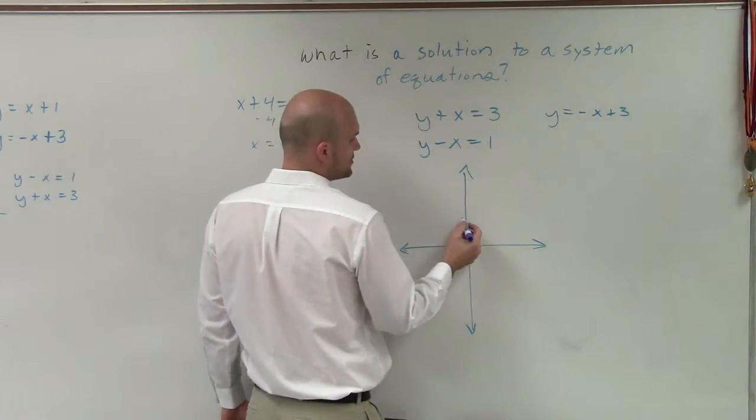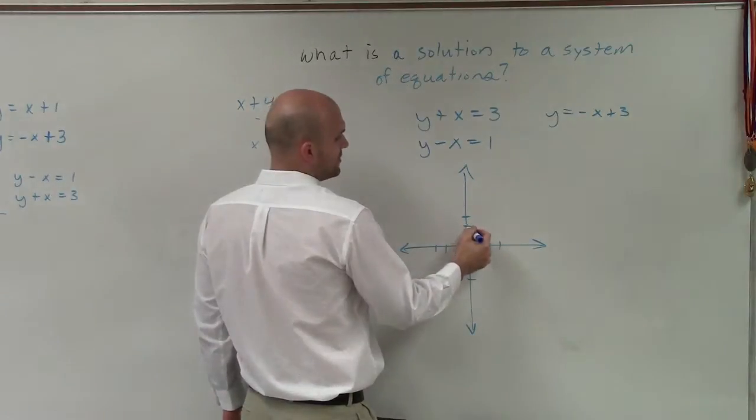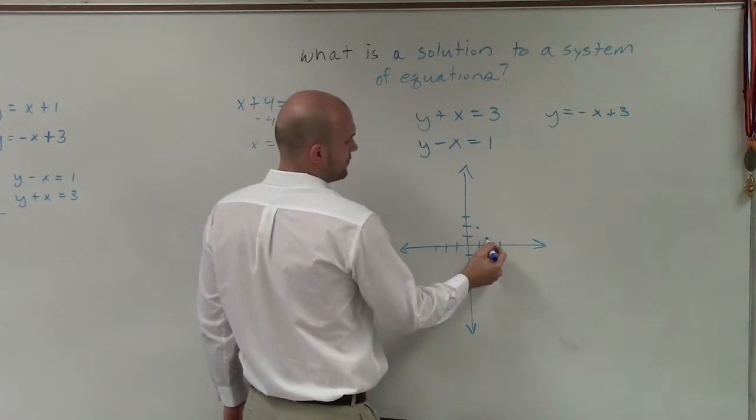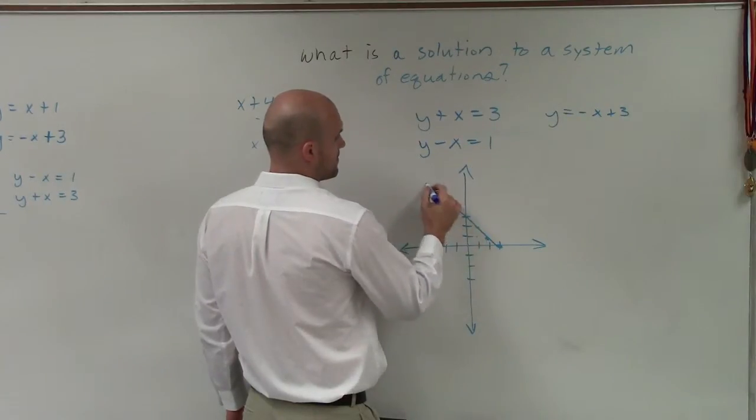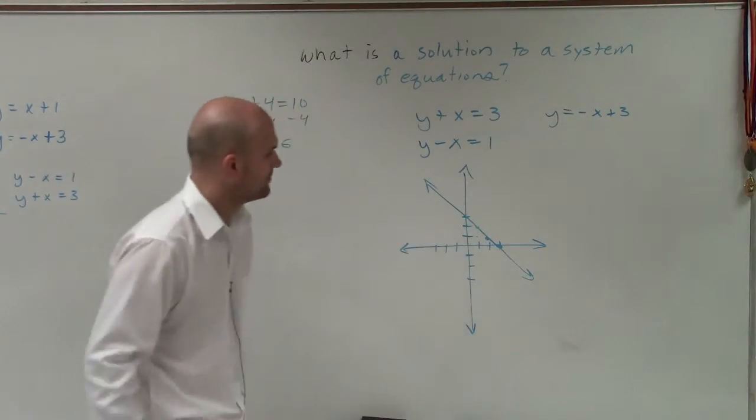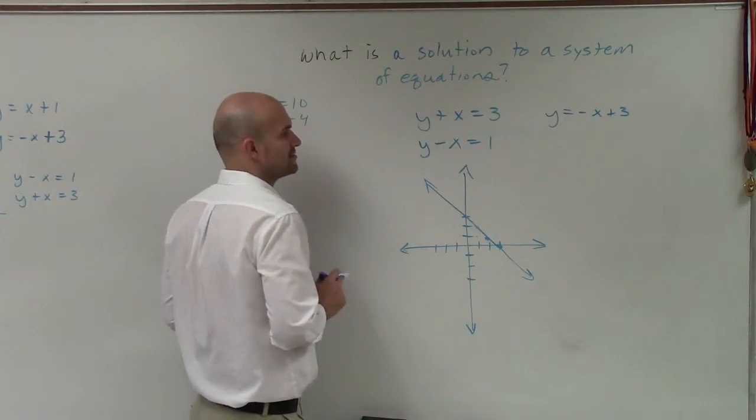So therefore, I'd go up to 3. 1, 2, 3. Go up to 3, go down 1, over 1. Down 1, over 1, down 1, over 1. A little bit of a rough line, but there we go. So that is my equation, y plus x equals 3.